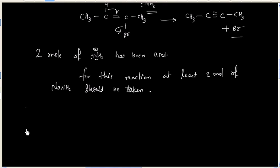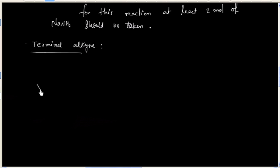This reaction can also be used for preparation of terminal alkyne. For example, if I have this alkene, this can be treated with bromine to give vicinal dihalide.